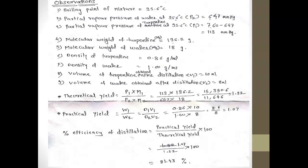The practical yield is simply the ratio of the weights of the two components — turpentine and water. The equation is (d1 × V1) / (d2 × V2), where d is density and V is volume. Substituting the observed values into the equation gives a practical yield of 1.07.